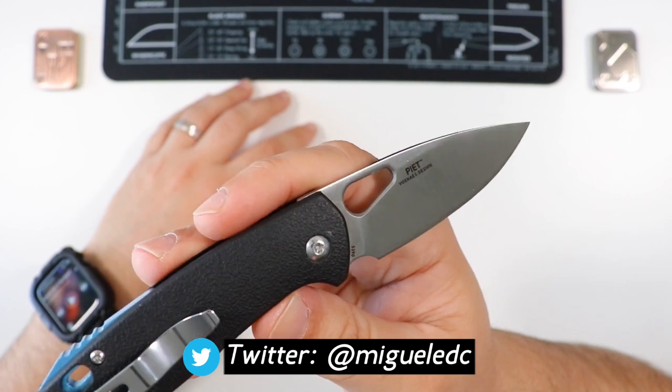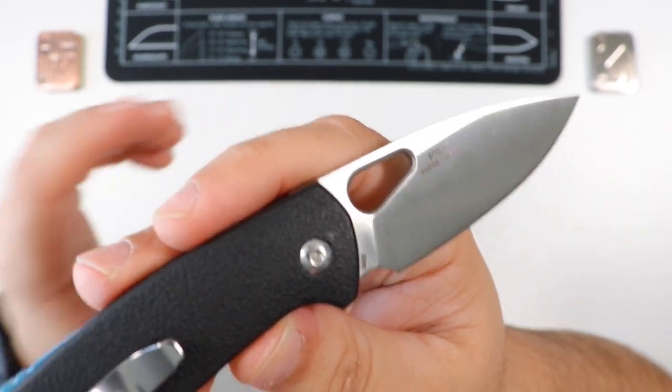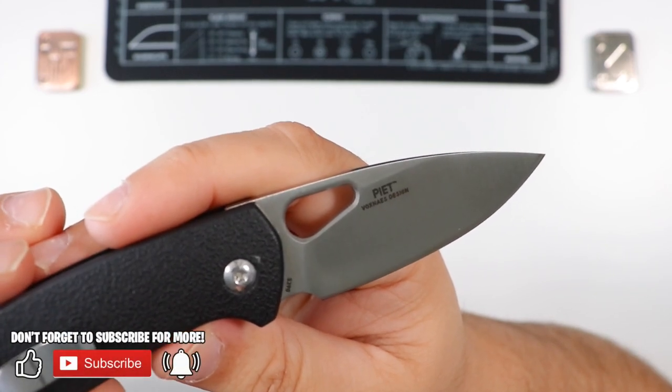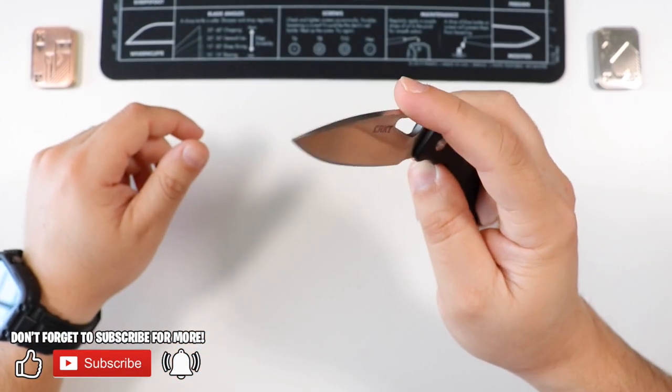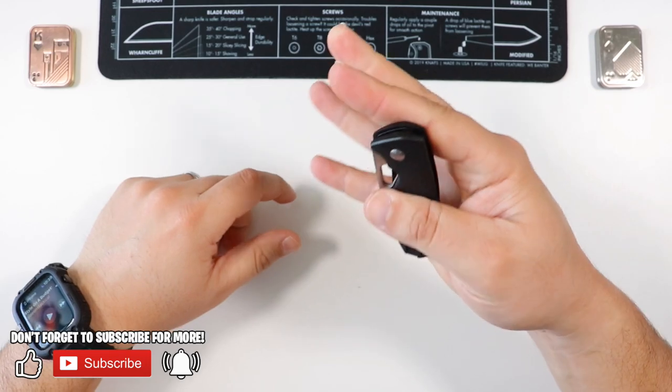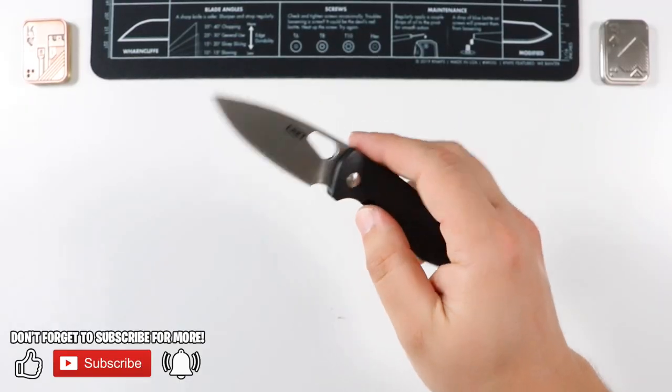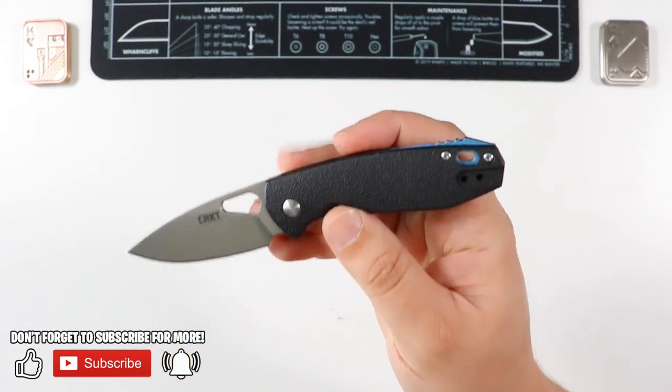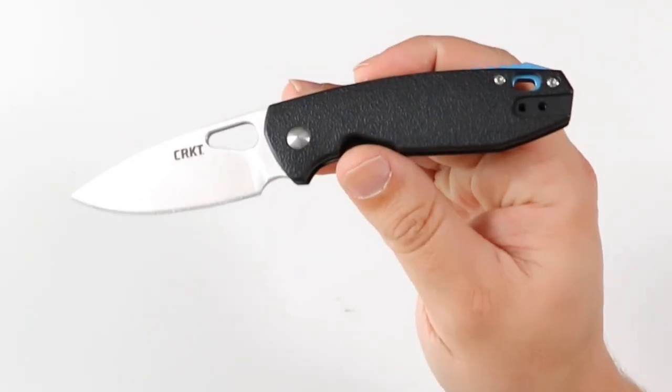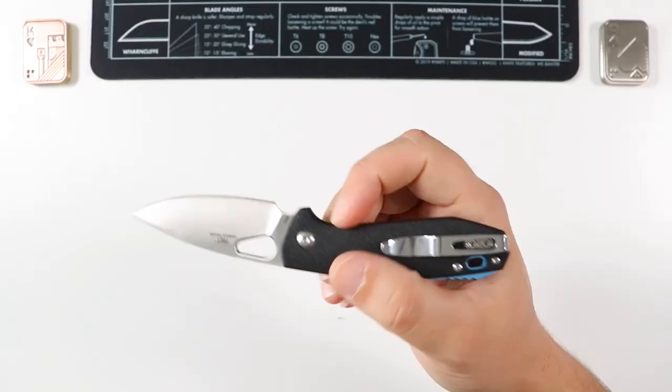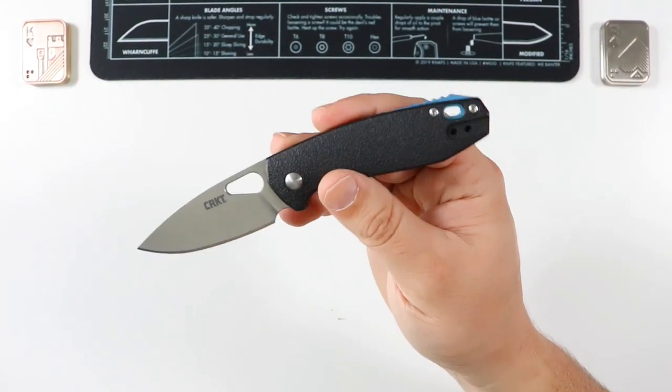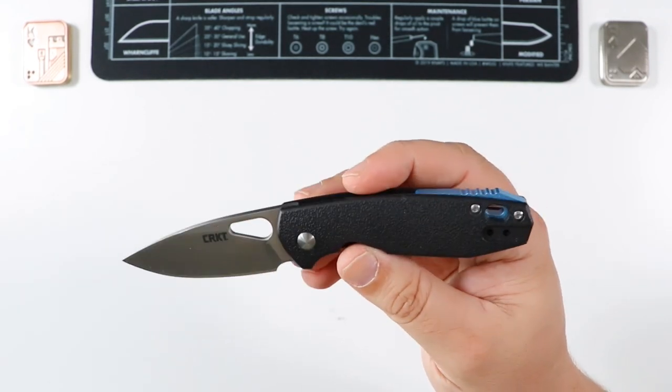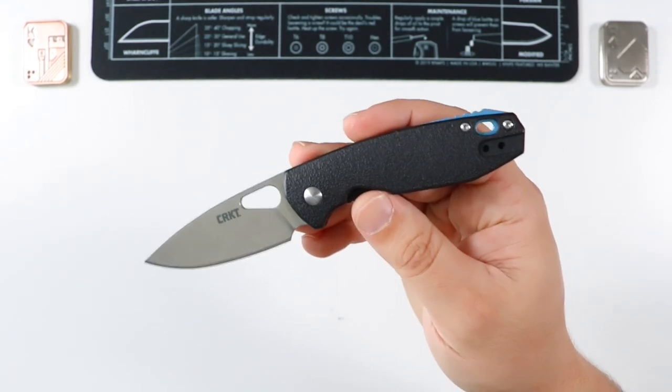This is a CRKT Piet. I know it's spelled oddly there, P-I-E-T, but it's pronounced Piet. This is a Jesper Voxnaes design out of Denmark. So the CRKT Piet, this guy is still a budget king this year. Is this still hanging on up there with all the budget options out there? It is often in special with the Blade HQ at only $15. Such a great, nice budget little EDC. So throughout the video, we're going to go ahead and answer that very question.